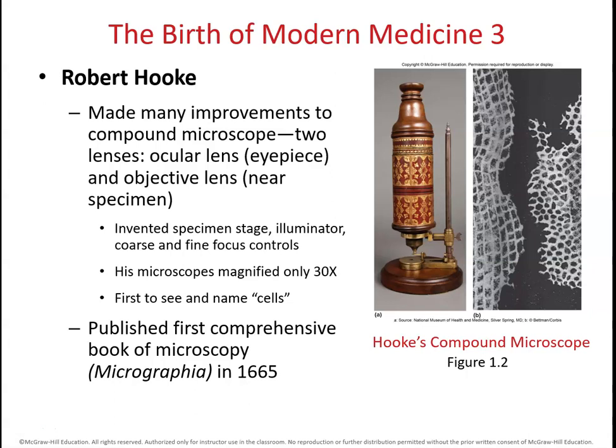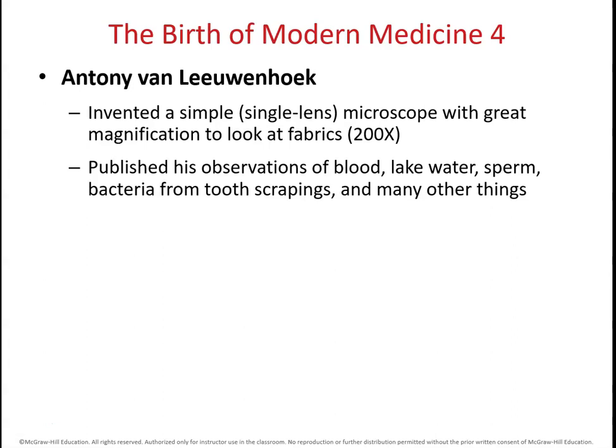Then there was Leeuwenhoek, who was not a scientist at first but a textile merchant trying to make a tool to gauge the quality of fabric. He made a single-lens microscope able to magnify 200 times because of his really good technique for manufacturing lenses. When he figured out how good his microscope was, he started looking at everything he could find. One of his famous observations was from a drop of rainwater, where he saw a huge variety of microbes moving around — he called them 'little animalcules,' as the word microorganism wasn't around at that time. He would look at everything he could get his hands on, draw pictures of it, and publish his findings.